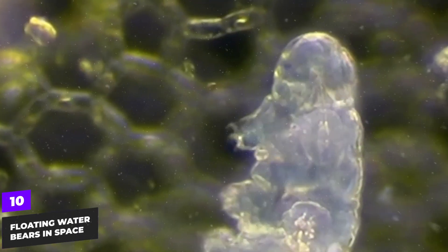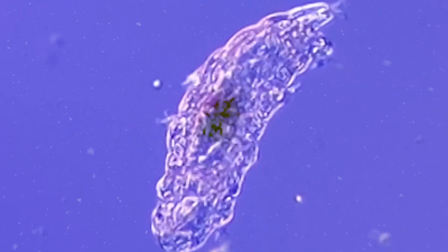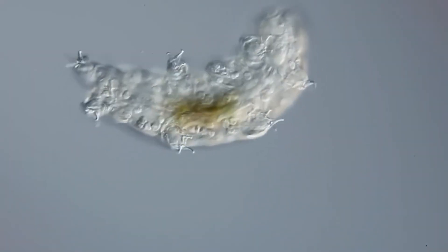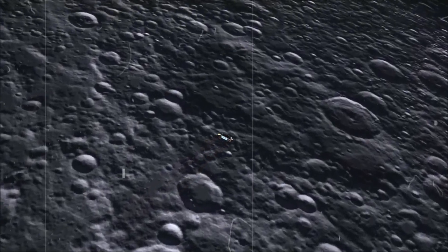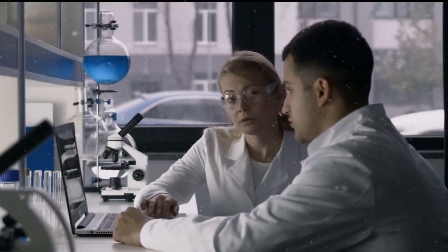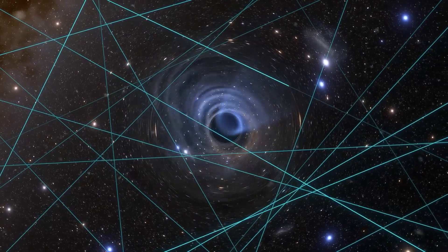Floating water bears in space. Tardigrades, also known as water bears, are microscopic creatures known for their extreme durability. They can survive in the vacuum of space and are one of the few species that could endure the harsh conditions, including cosmic radiation and temperature extremes.